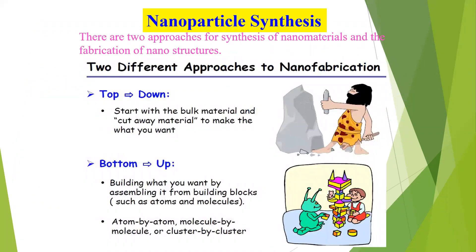There are two different approaches for nanomaterial synthesis: one is the top-down approach and another one is the bottom-up approach. The top-down approach is taking bulk material and cutting away that material to finally make nanomaterials in the range of 1 to 100 nanometers, whereas the bottom-up approach is building what you want by assembling atom by atom or molecule by molecule.